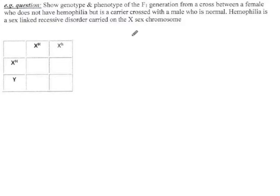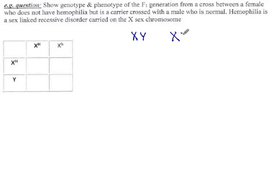But in addition to that, there are a pair of chromosomes — you can think of it as the 23rd pair — which are called the sex chromosomes, and they are the ones that are different between males and females. Males have an X and a Y, and females have two Xs.